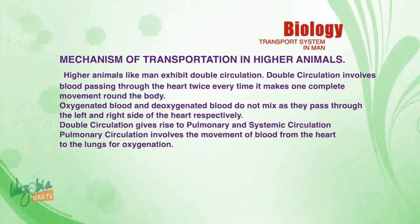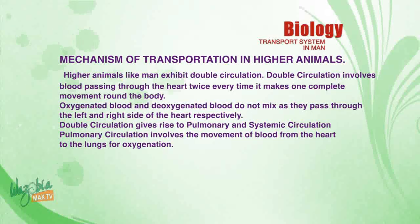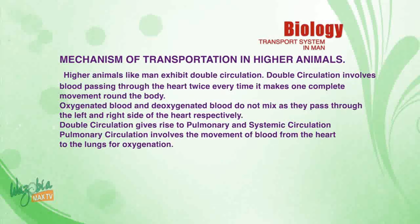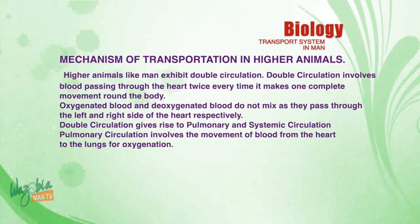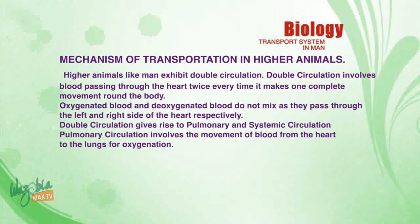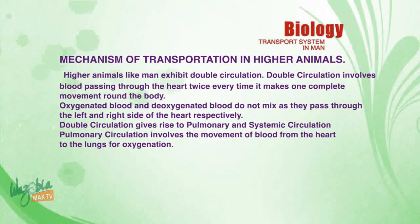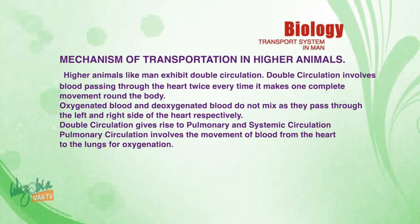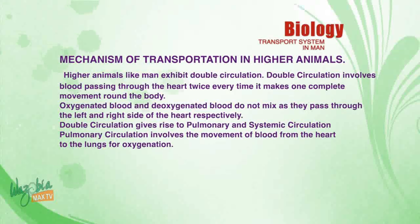Now let us discuss the mechanism of transportation in higher animals. Higher animals like man have what is called double circulation. Double circulation involves blood passing through the heart twice every time it makes one complete movement around the body. Oxygenated blood and deoxygenated blood do not mix as they pass through the left and right sides of the heart respectively.